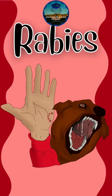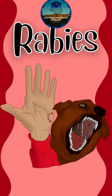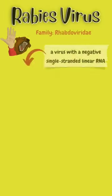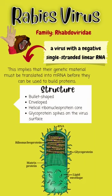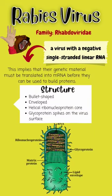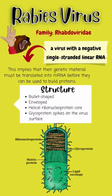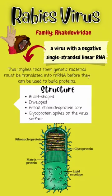Let's be aware of rabies and how it is caused and prevented. Rabies is a virus that comes from a family of Rhabdoviridae. It's a virus with a negative single-stranded linear RNA, which means its genetic material has to be translated into messenger RNA to build protein.